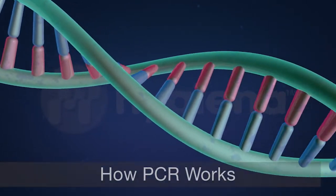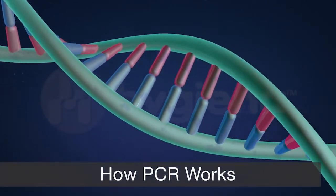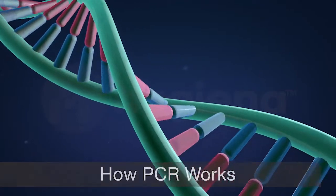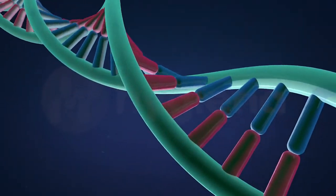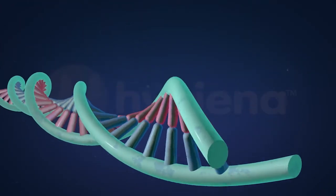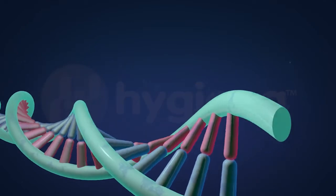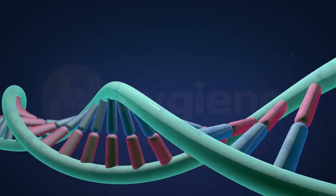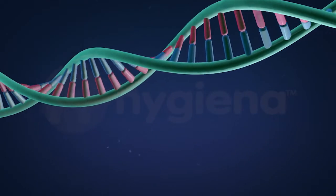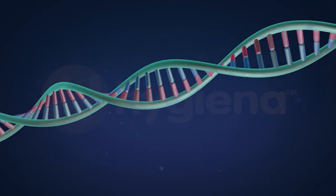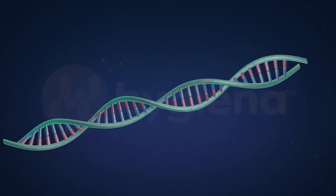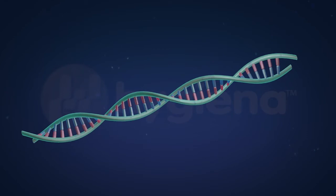All living organisms have DNA in their cells. Each organism's DNA is unique, which presents a highly accurate means of identifying bacteria. But to do so, a specified fragment of the target bacterial DNA has to be isolated and amplified to detectable levels.